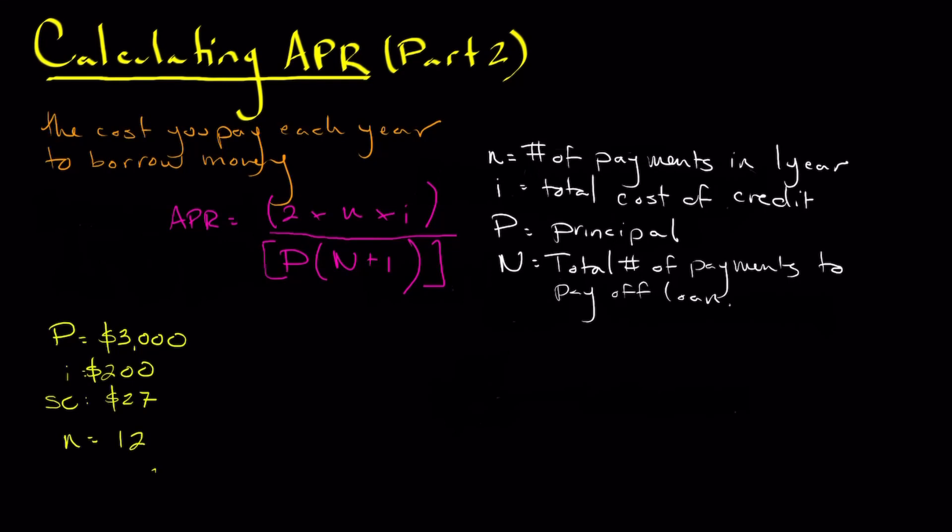And just to keep things simple, we're also going to have big N will also equal 12. So this is just a one year loan.